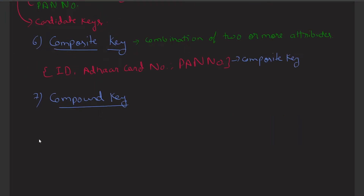The seventh is the compound key. Compound key is similar to the composite key. It is also the combination of two or more attributes that will uniquely identify a row in a table. For example, if a single attribute is not helpful in uniquely identifying any row, then we can combine two attributes and that will uniquely identify the record.